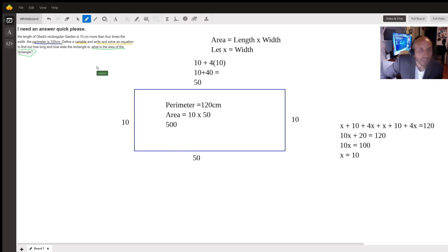So here are all your answers. You have the area of the rectangle is 500. You have the variable, which is x, and we said it's going to equal the width. We have this equation right here, 10x plus 20 equals 120, or 10x equals 100. And we solved for the area, which is 500.